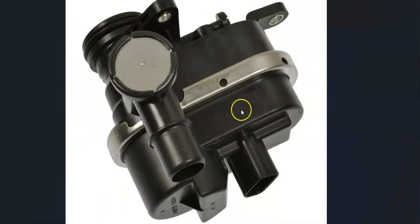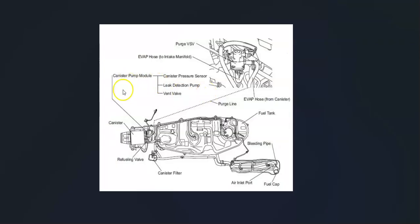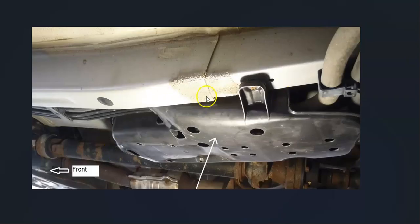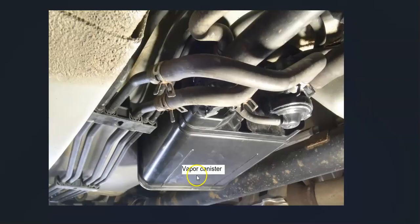The leak detection pump is going to be located on the vapor charcoal canister, which is located up and underneath the vehicle by the gas tank. Its exact location can vary a little bit, and sometimes it's up underneath a metal guard or something like that.